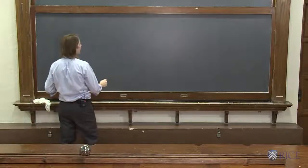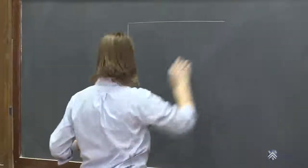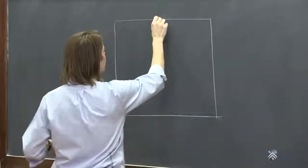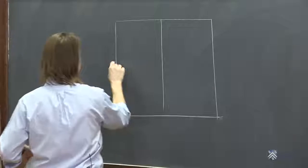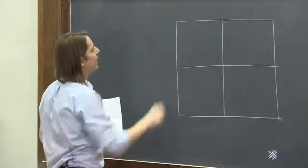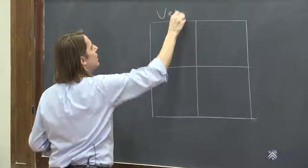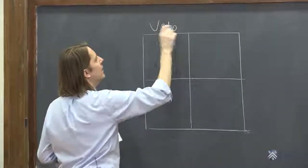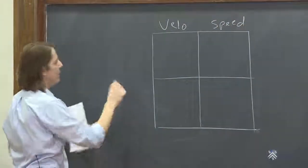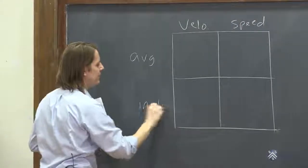We're actually going to discover there's a fourth one. So I like to draw the chart kind of like this. I'm going to write velocity here, v low, and I'm going to write speed here. And then I'm going to write average here and instantaneous here.